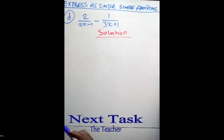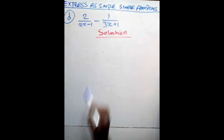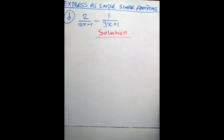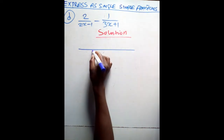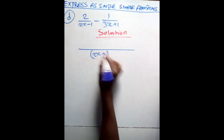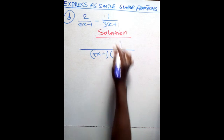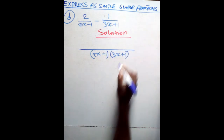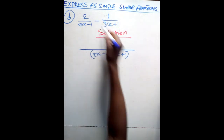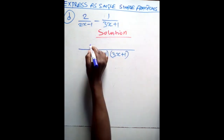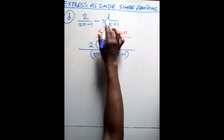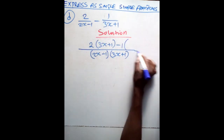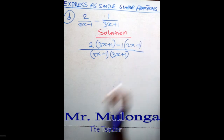On the board we have another question: 2 over (2x minus 1) minus 1 over (3x plus 1). What you do first of all, you find the lowest common denominator, which will be the product of the two denominators. You open brackets: (2x minus 1)(3x plus 1). At this point cross multiply — meaning this 2 multiplies (3x plus 1) minus, this 1 multiplies (2x minus 1).